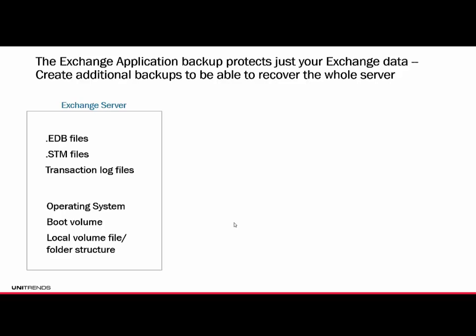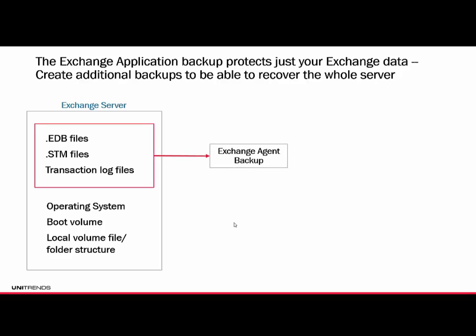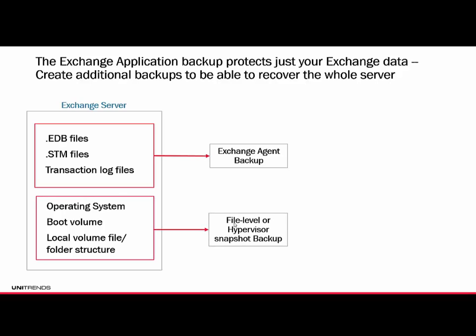The Exchange application backup protects just your Exchange data. When you use the Unitrends application agent for Exchange, it's only grabbing your Exchange databases — the EDB, the STM, and the transaction log files. You may want to create additional backups to recover the whole server. The agent backs up the EDBs, STMs, and transaction logs, while the file-level or hypervisor snapshot backup will protect the operating system, the boot volume, the local file and folder structure, and the application underneath.